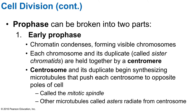In early prophase, the chromatin condenses, forming bar-like chromosomes visible with a light microscope. Each duplicated chromosome appears as two identical threads called sister chromatids, held together at a constricted region called the centromere. As chromosomes appear, the nucleoli disappear, and the two centrosomes separate. Centrosomes act as focal points for the growth of microtubule assemblies called mitotic spindles. As microtubules lengthen, they move centrosomes toward the opposite ends — the poles — of the cell.